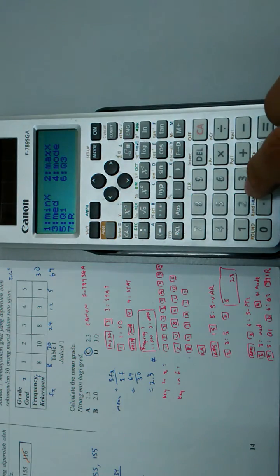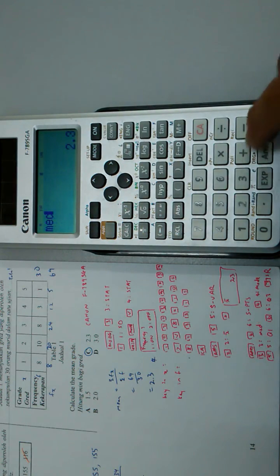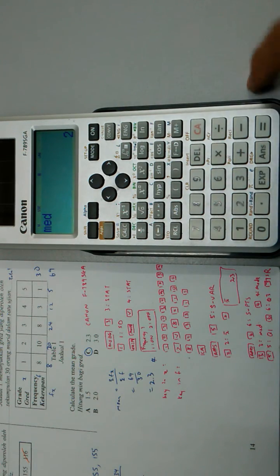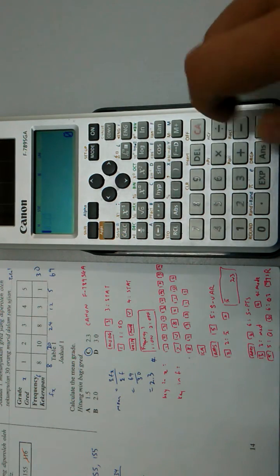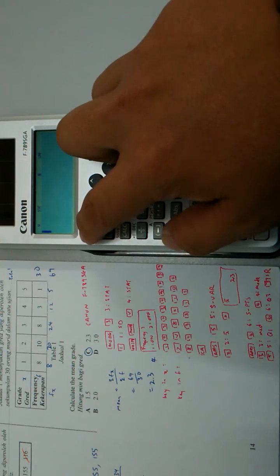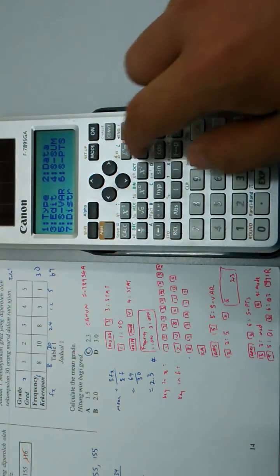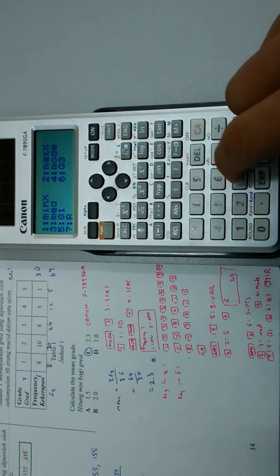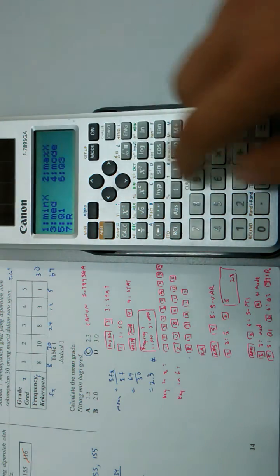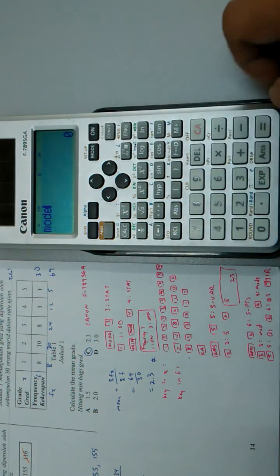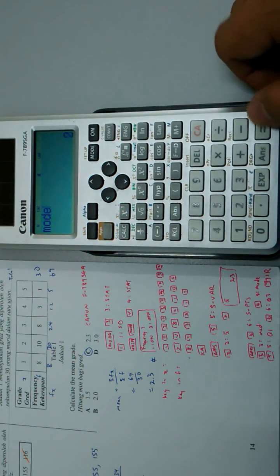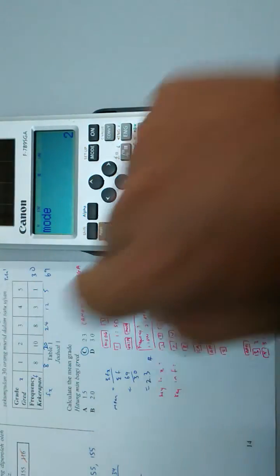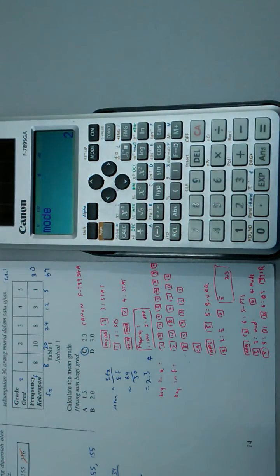If I want the median, I press equal, then equal again — median equals 2. And pressing AC, Apps, number 6, mode — mode is number 2. This is the mode.